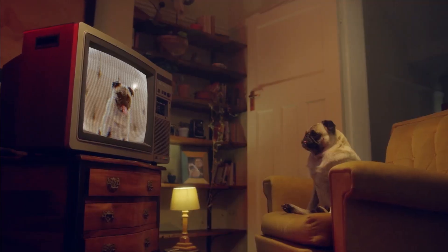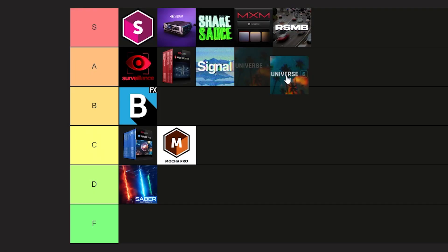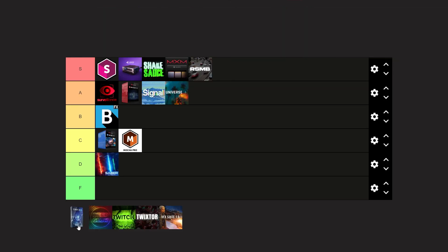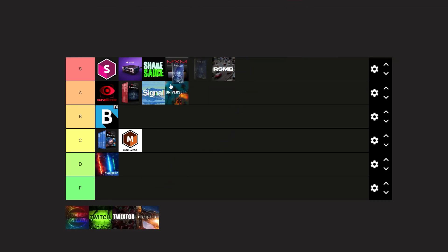Now we have Universe - this is a bit controversial because a lot of people like it and a lot of people don't. I use Universe but not as much as Sapphire or other S tier plugins. I'll rank it around A for now, just because the effects on Universe feel a bit old-fashioned and there are a lot fewer effects compared to Sapphire. The usable effects are like two or three only. Could have been B tier but let's put it at A because it's been the OG plugin for music videos.